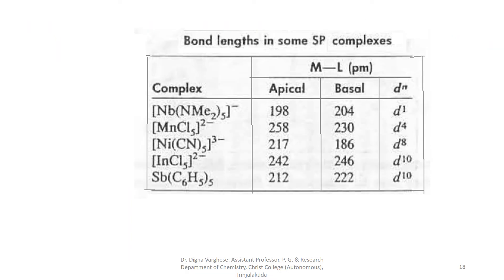Bond lengths in some square pyramidal complexes vary: for a niobium compound the apical bond length is 198 pm and the basal bond length is 204 pm; for a manganese complex the values are 258 pm and 230 pm respectively. So in some cases the apical bond length is greater, and in others the basal bond length is greater.